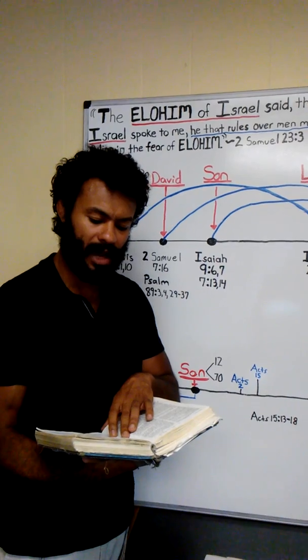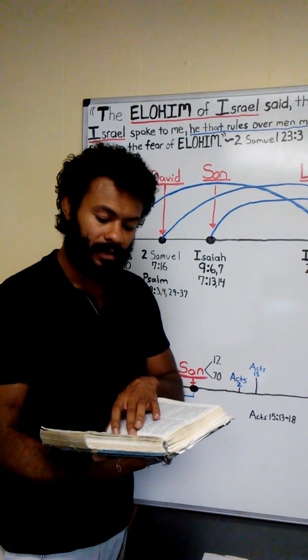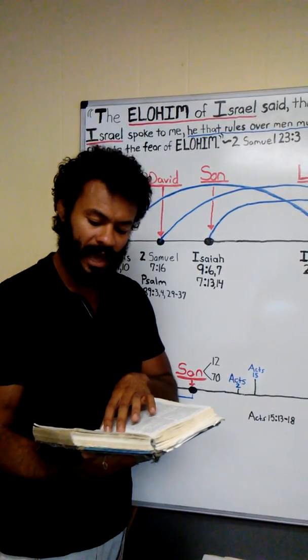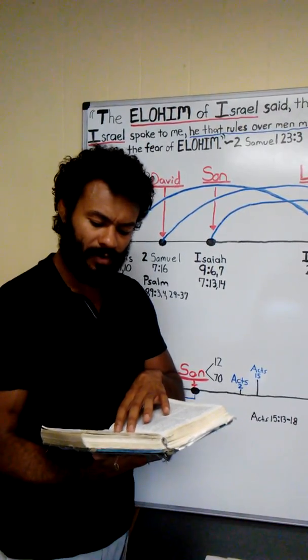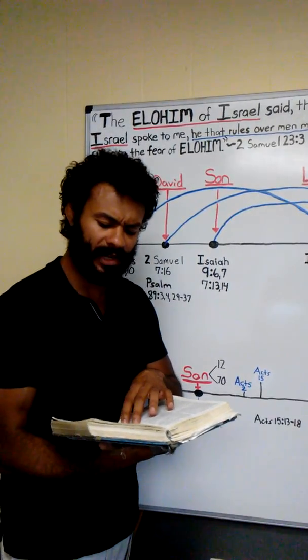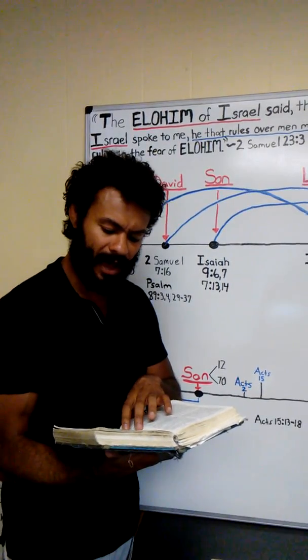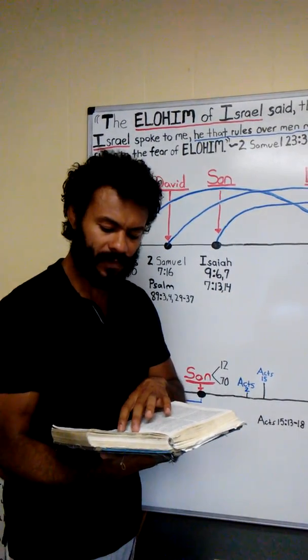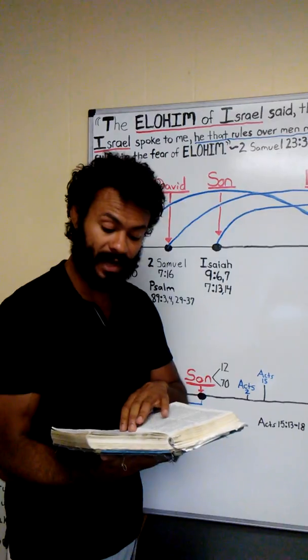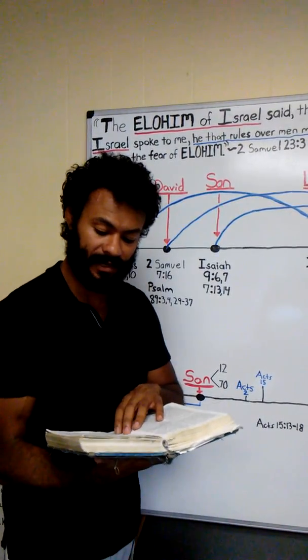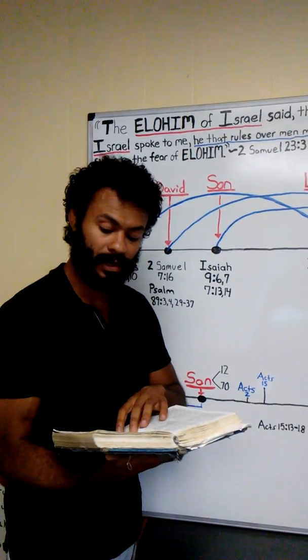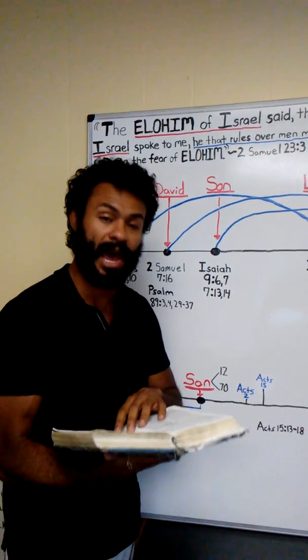And the word of Yahuwah came to Jeremiah, saying, Have you not observed what these people have spoken, saying the two clans which Yahuwah has chosen have been rejected by him? So they have despised my people, no more to be a nation before them. Thus says Yahuwah, If my covenant is not with day and night, and if I have not appointed the laws of the heavens and earth, then I would also reject the descendants of Yaakov and David my servant, so that I should not take of his descendants to be rulers over the descendants of Abraham, Yitschak, and Yaakov. For I shall turn back their captivity and have compassion on them.